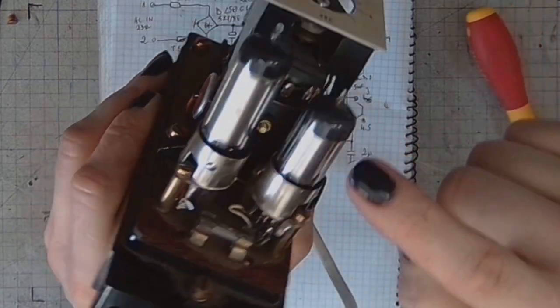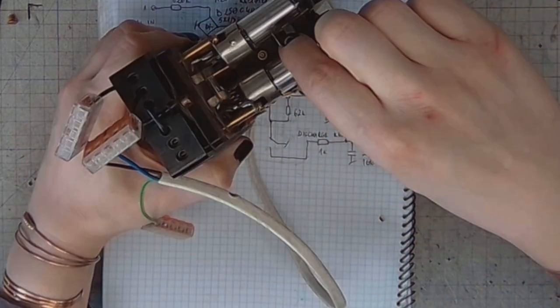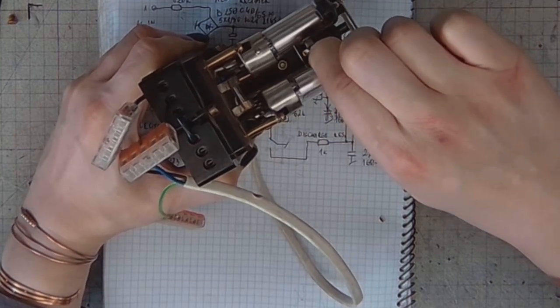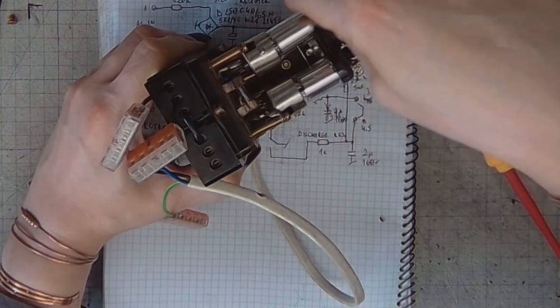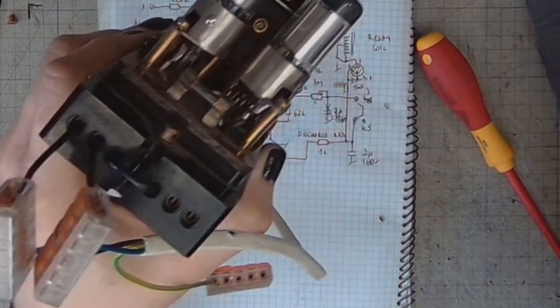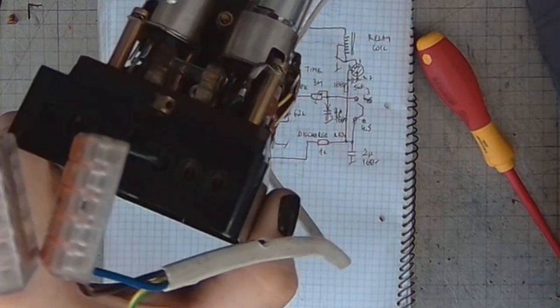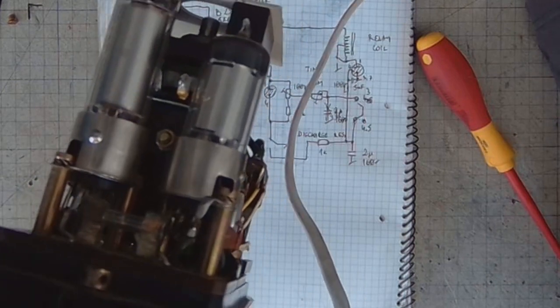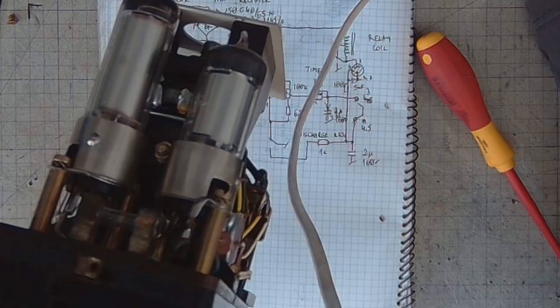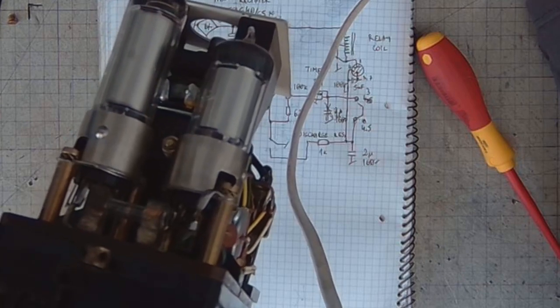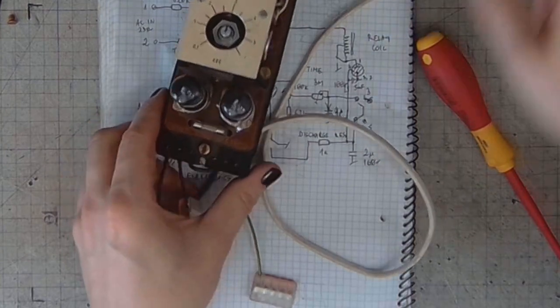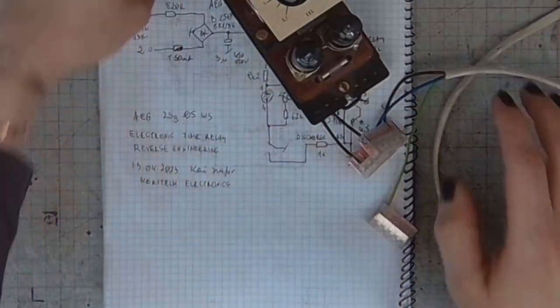You may have seen the thyratron starting to glow for a very short moment. Maybe if I pull those tubes away, like a millimeter or so, you may have seen the pulse of purple glow.